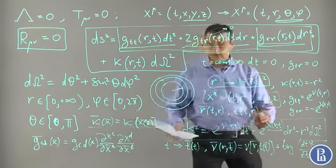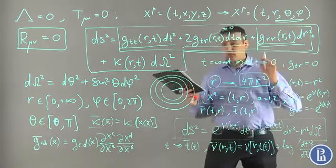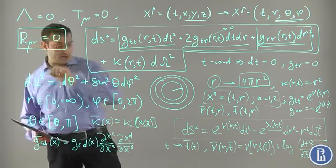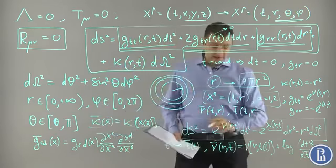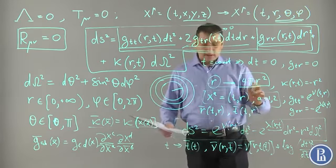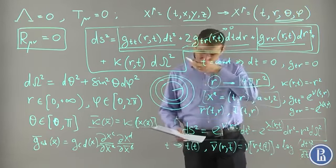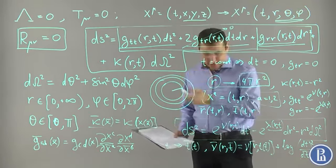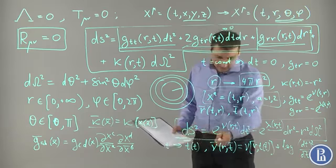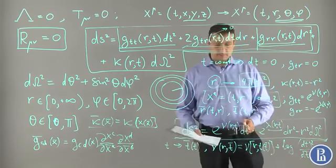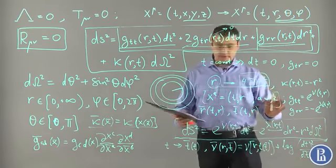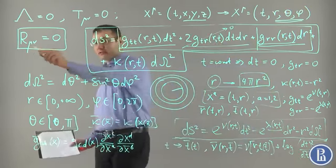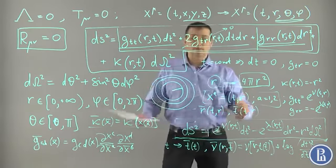What we did so far, we want to find the spherically symmetric solution of these equations. Spherical symmetry up to some redefinitions, change of coordinate transformation. So generic spherically symmetric metric can be represented in this form. That's our point so far. Now we're going to calculate for this metric components of Ricci tensor and put them to zero. That's what we're going to do right now.